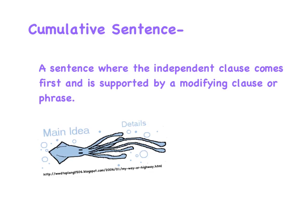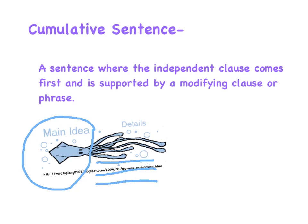Next, we're going to talk about a cumulative sentence. A cumulative sentence is a sentence where the independent clause comes first and is supported by a modifying clause or phrase. This picture of a squid might help you visualize what a cumulative sentence looks like. The main body of the squid is like the main idea or independent clause, and the many tentacles of the squid are like the details in the modifying clause.